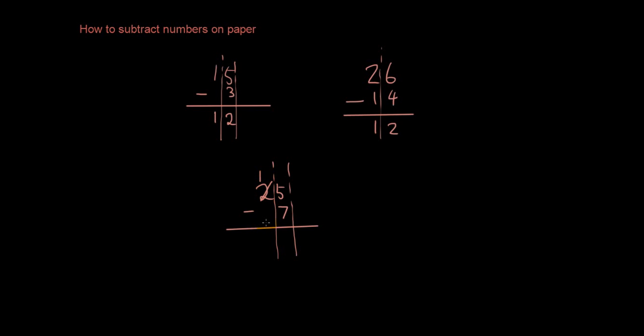I only have 10 left, and I'm borrowing that 1 and putting it in the first column. So now it's going to be 15 take 7. 15 take 7, what's the answer? The answer is 8. And now I bring down this 1, because 1 minus nothing is 1, so the answer is 18.